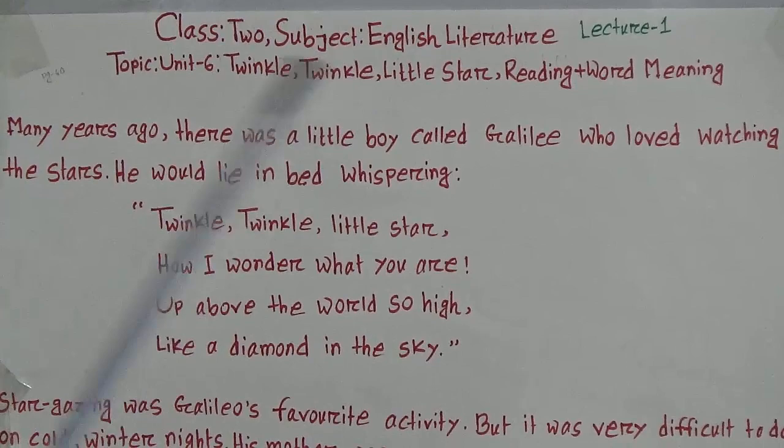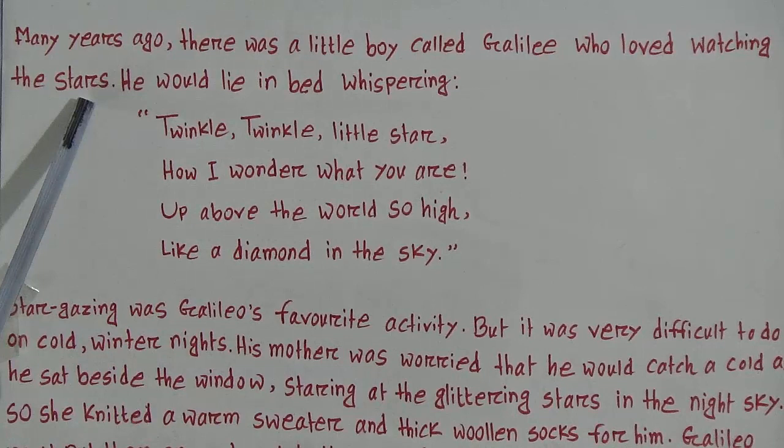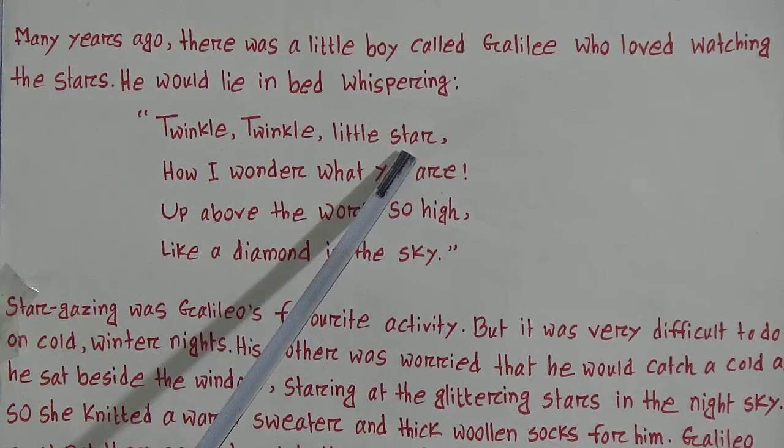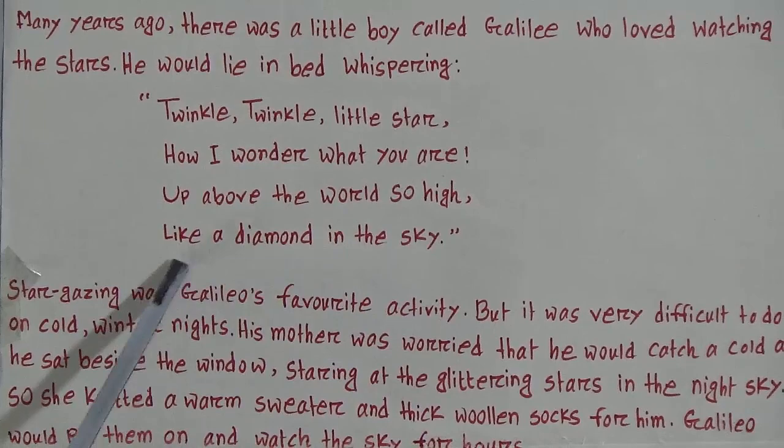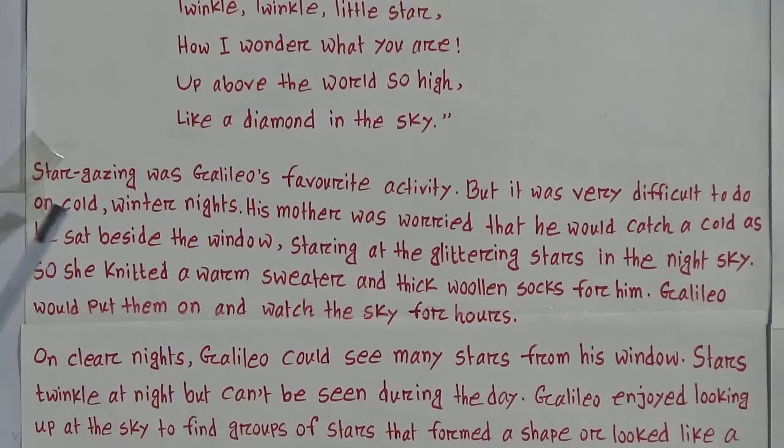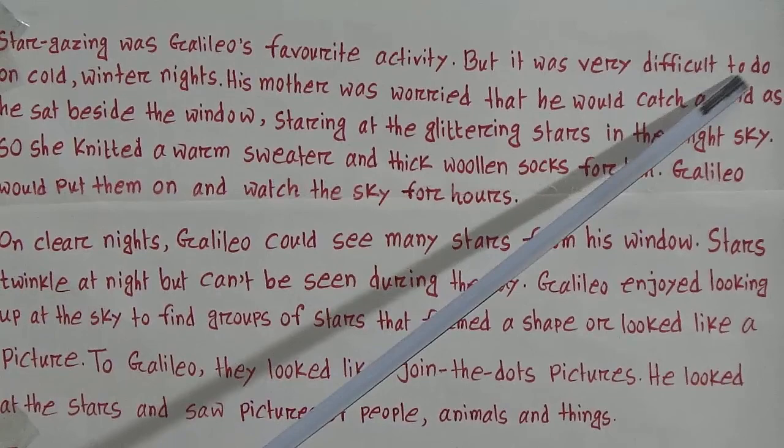Many years ago there was a little boy called Galileo who loved watching the stars. He would lie in bed whispering: 'Twinkle twinkle little star, how I wonder what you are, half above the world so high, like a diamond in the sky.' This was Galileo's whispering. Star gazing was Galileo's favorite activity.